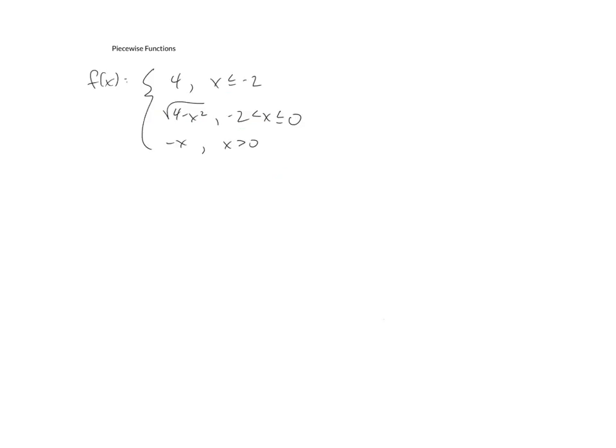So now we'll take a look at a different example, one that has three different pieces to it. And it's no different. We'll just go step by step through this. Now, I'll go ahead and start with just a big xy plane. And as I put these together, I'm not really going to pay much attention to the restrictions just yet. Instead, I'm just going to get the graphs of y equals four, y equals the square root of four minus x squared, and y equals negative x all on the plane.